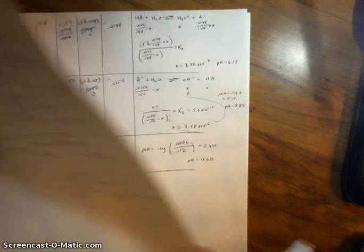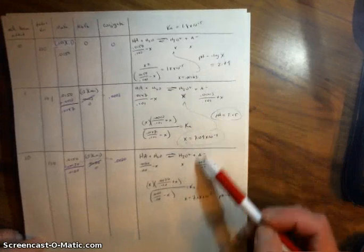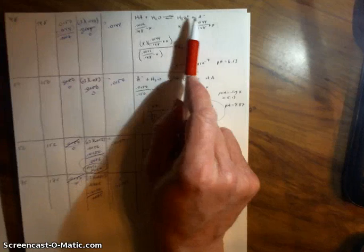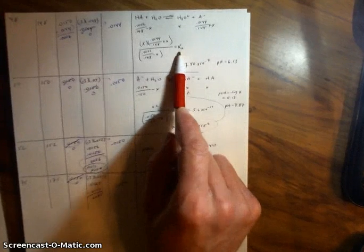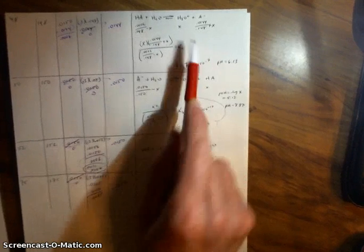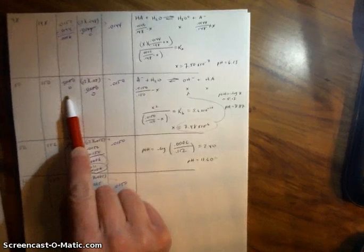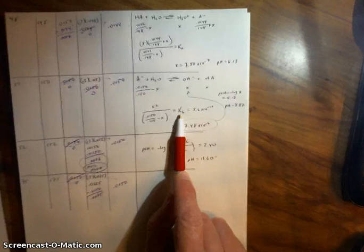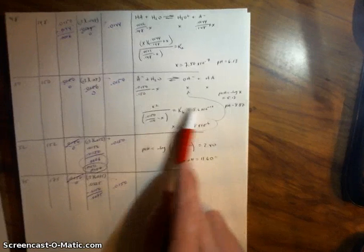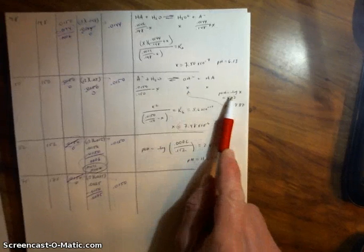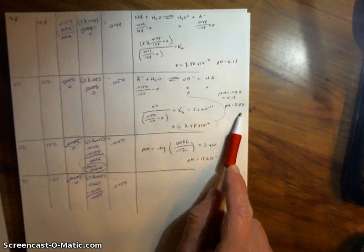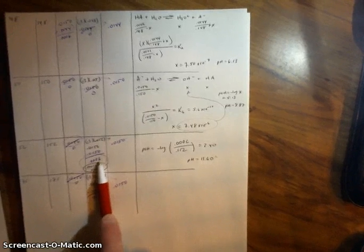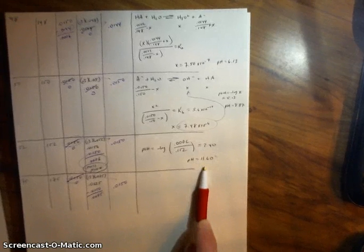As an overview of the entire problem: from the beginning up to but not including the equivalence point, it's an equilibrium problem using the acid reaction — acid plus water makes hydronium and conjugate base, using the same Ka throughout, with pH changing as starting concentrations change. At the equivalence point, with no acid left, use the conjugate base reaction, calculate Kb as Kw over Ka, solve for x which is hydroxide, take the negative log for pOH, then 14 minus that for pH. Beyond the equivalence point, there's excess strong base (sodium hydroxide), so pOH is the negative log of the strong base molarity, and 14 minus that is pH. That's how you do titration problems.